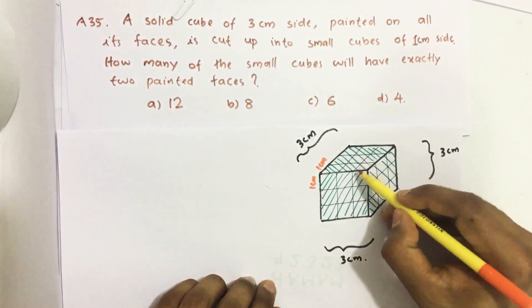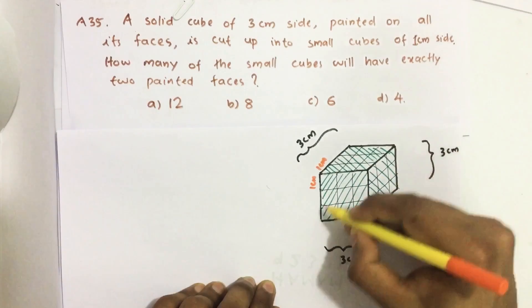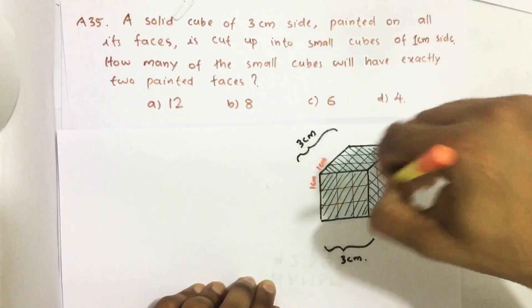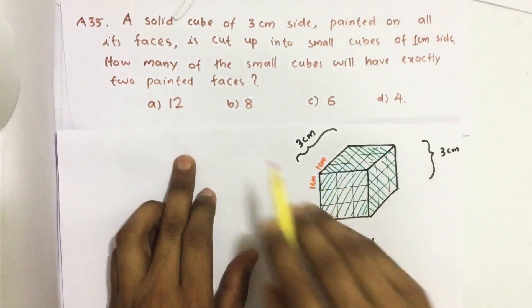So number of edges, 4 here in the upside, 4 in the bottom side and 4 surrounding, total 12. So our answer is 12.